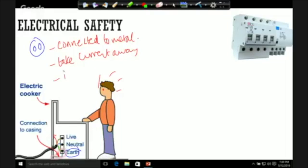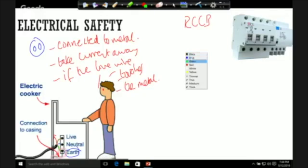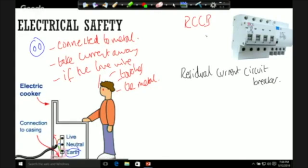But what the earth wire does is take that current away from the device and safely takes it away from the person. So this earth wire here is connected to the metal and it takes current away from the device if the live wire for whatever reason touches the metal. Now the second appliance I want to talk about in terms of electrical safety is the RCCB - the residual current circuit breaker. You will need to remember what this stands for.